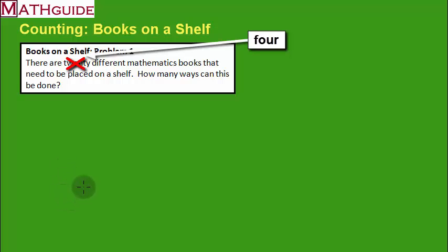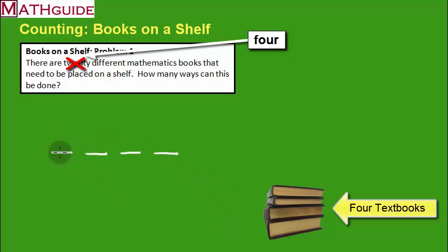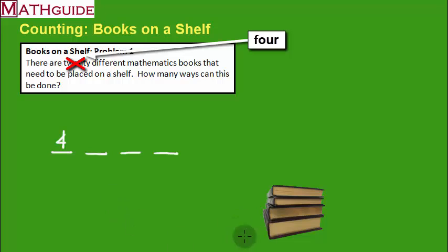Imagine there are four textbooks laying on the ground and we want to put them on a shelf. There are four positions on the shelf. For the first spot, I have four possible choices. Once I place a book there, there are three textbooks left, so three options for the second spot, then two options, and finally one option for the last spot.